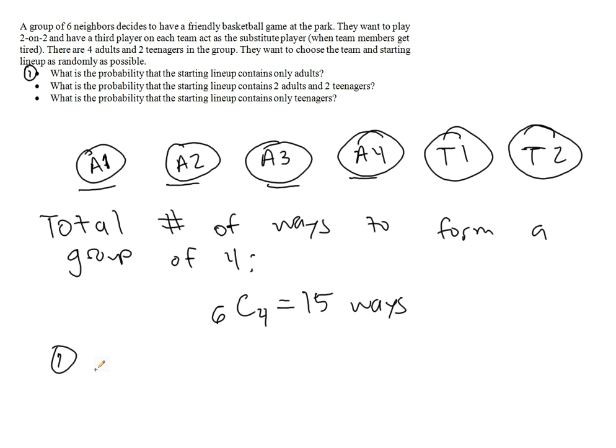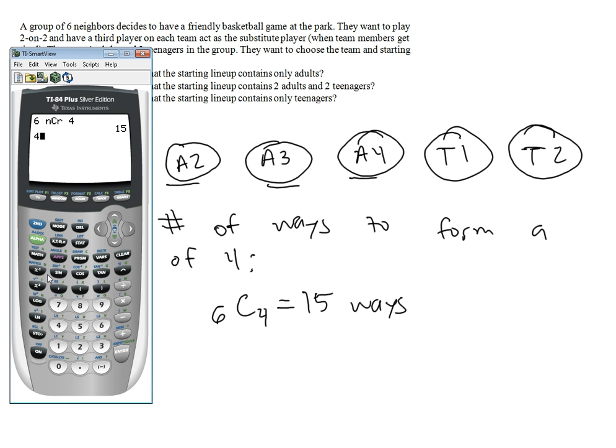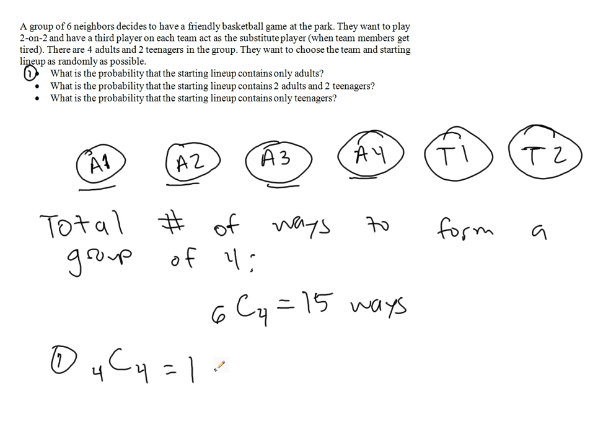Alternatively, from the subgroup of adults, there are four of them, and we want to select four people. You'll notice our n has changed because we're only counting ways to grab the four adults. Since we want 4C4, that tells us there's only one way to do that, one way to have all adults.